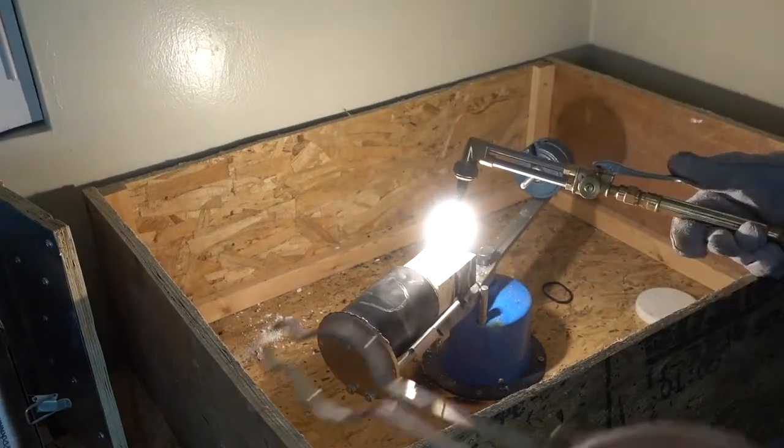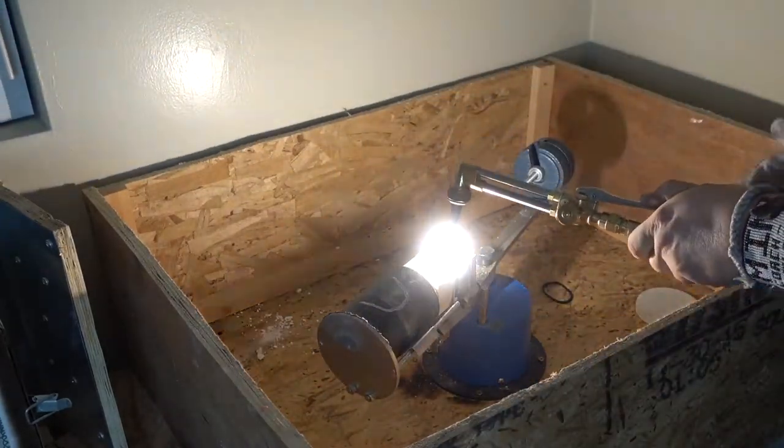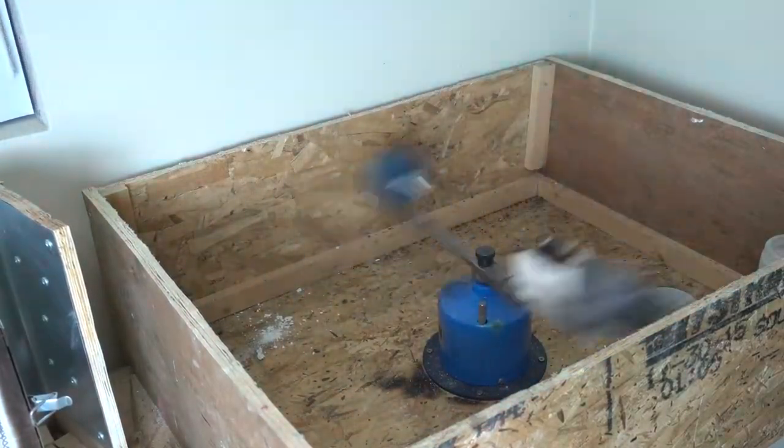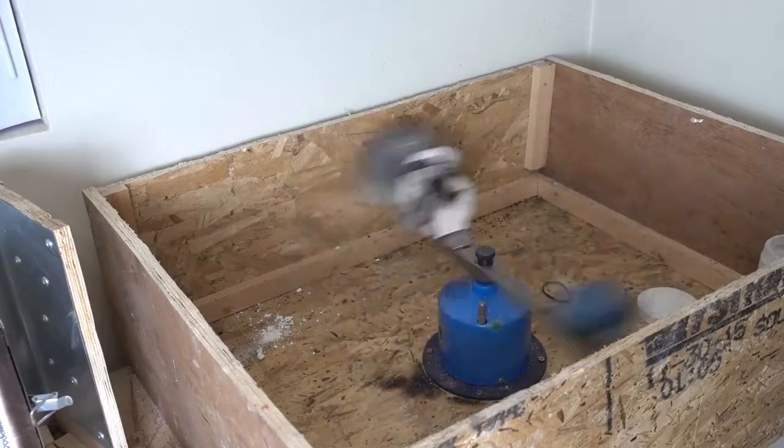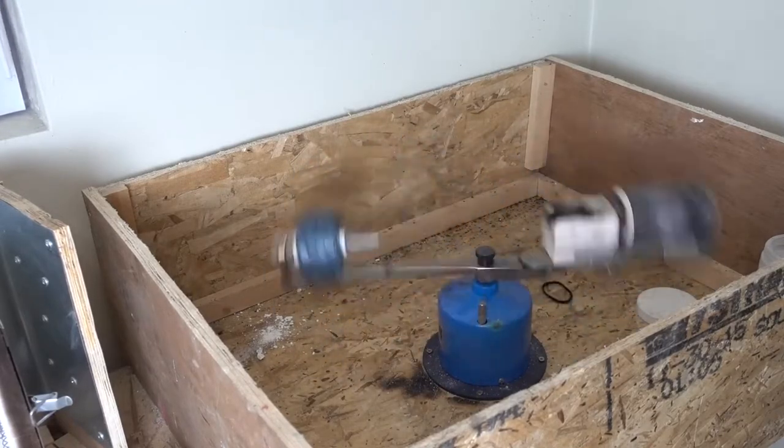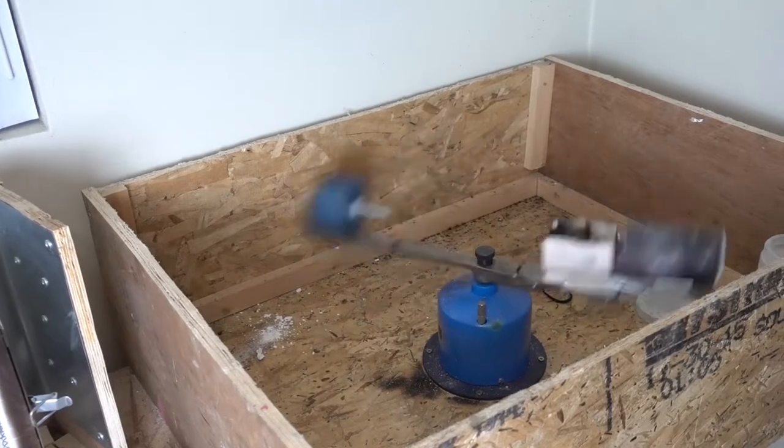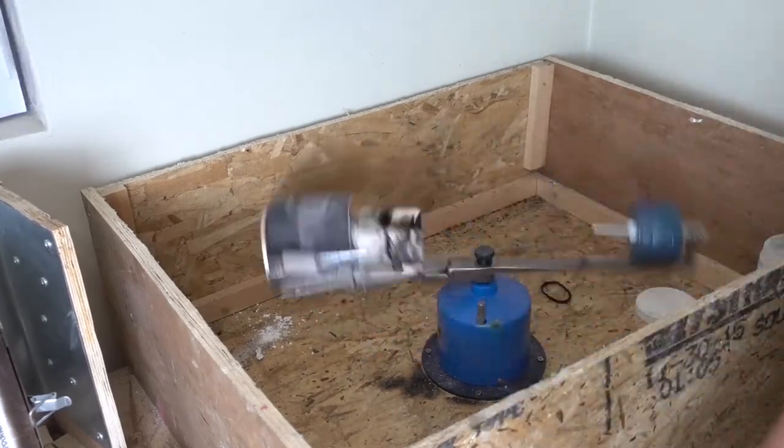We pull this pin and it starts spinning. You'll see all the heated metal—we pull the pin and let her rip. It's forcing all that molten metal inside the crucible with super high G-forces inside that void, filling all the nooks and crannies.